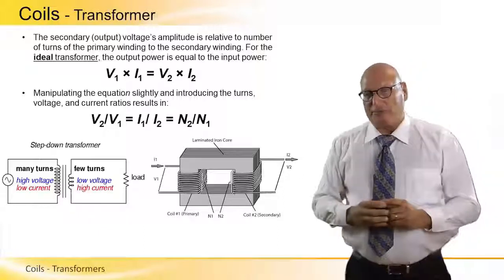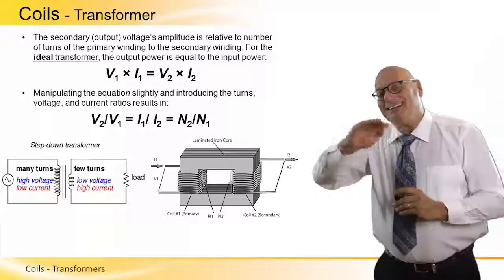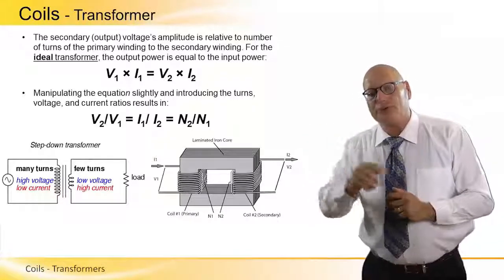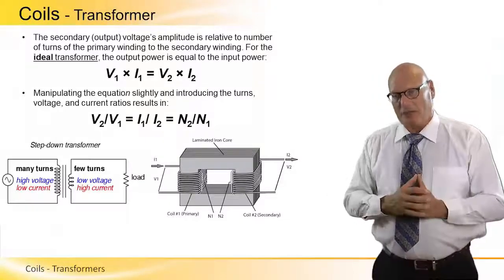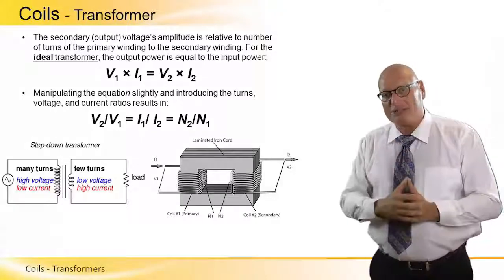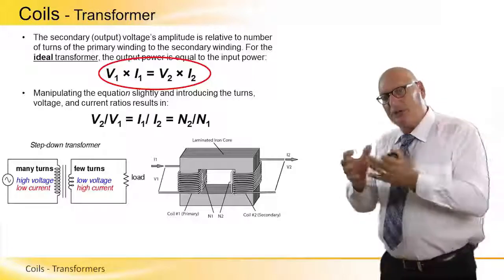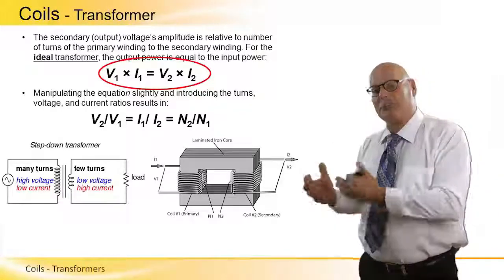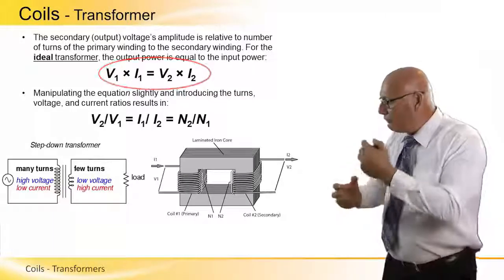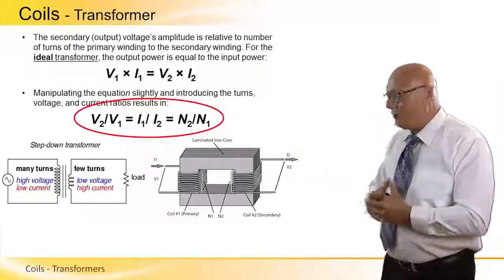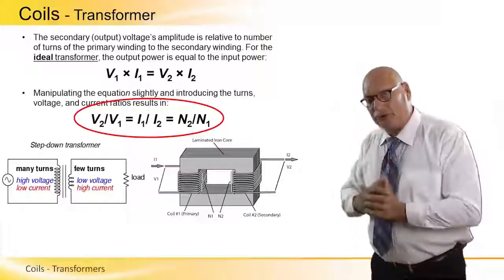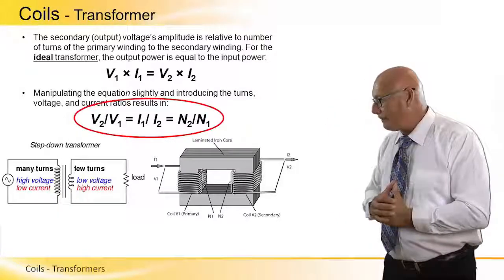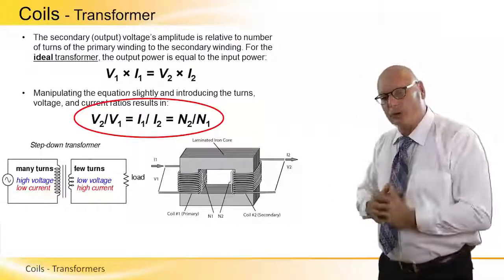And if we look at the formula, the equation of a transformer, an ideal transformer, one that has no losses, we can say that the secondary voltage amplitude is relative to the number of turns of the primary winding to the secondary winding. In an ideal transformer situation, the formula is V1 times I1, meaning the multiplication of V times I of the primary, is equal to V2 times I2, meaning the V times I of the secondary. If we continue to develop this formula, we will see that V2 over V1 is equal to I1 over I2. The other way around, it's reversed. And it's equal to the ratio of the number of turns, N2 divided by N1.